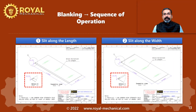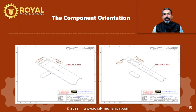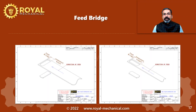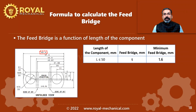In this illustration, I have marked the component length and the component width. You can see there is certain extra raw material present in the direction of the feed. This extra raw material is called the feed bridge. We use a simple formula to calculate the value of the feed bridge. When the length of the component is less than or equal to 50 millimeters, the value of the feed bridge will be equal to the thickness of the component, with a minimum value of 1.6 millimeters.